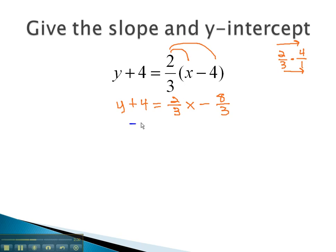Next, to get the y alone, we subtract 4 from both sides. On the left, we have y. On the right, we begin with 2 thirds x.